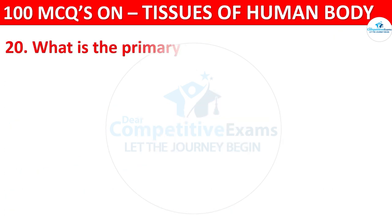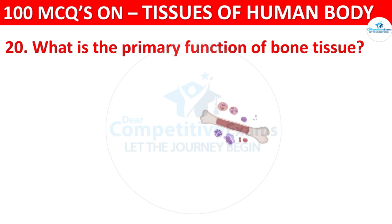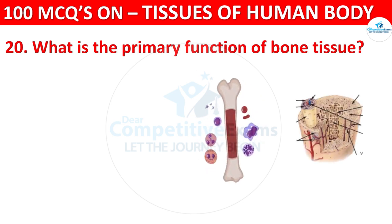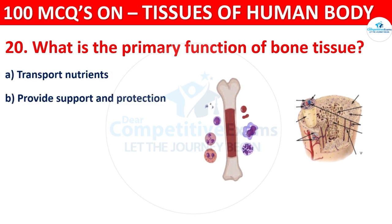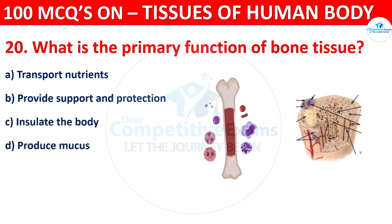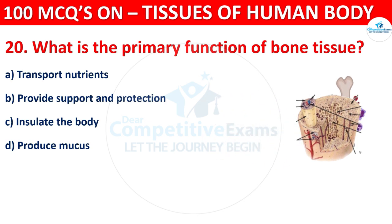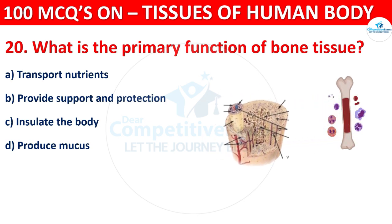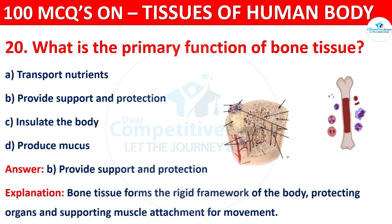Question number twenty: what is the primary function of bone tissue? Options are transport nutrients, provide support and protection, insulate the body, or produce mucus. The correct answer is B, that is provide support and protection. Bone tissue forms the rigid framework of the body, protecting organs and supporting muscle attachment for movement.